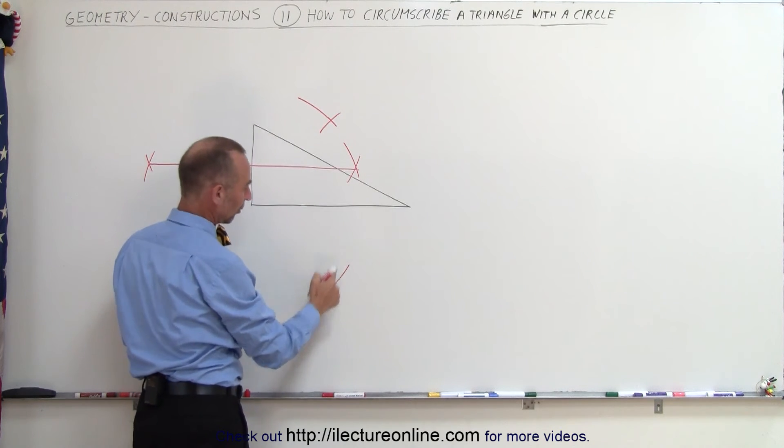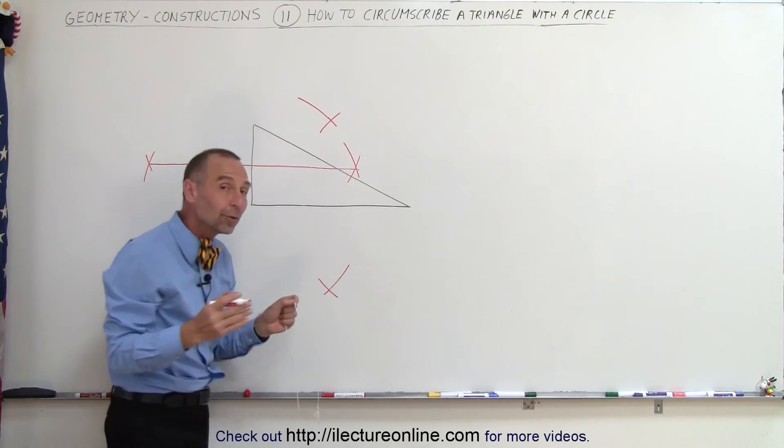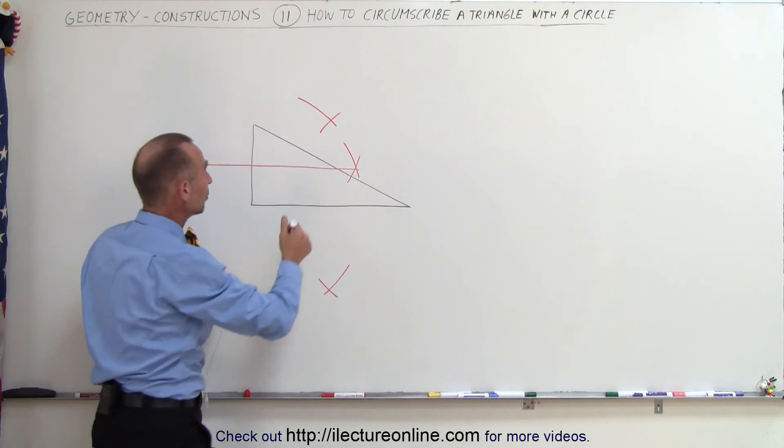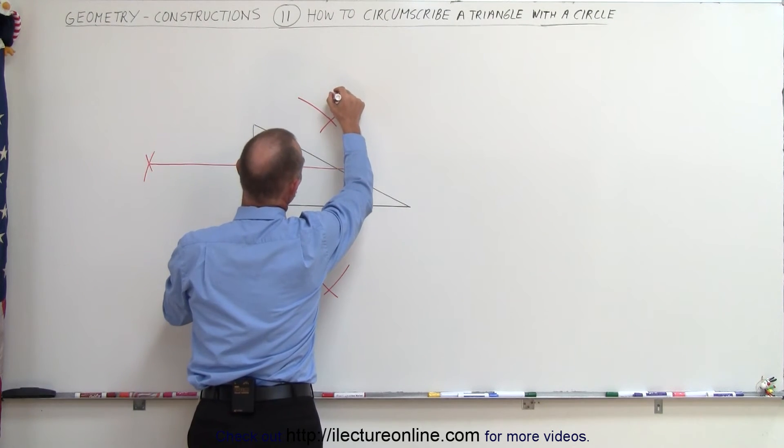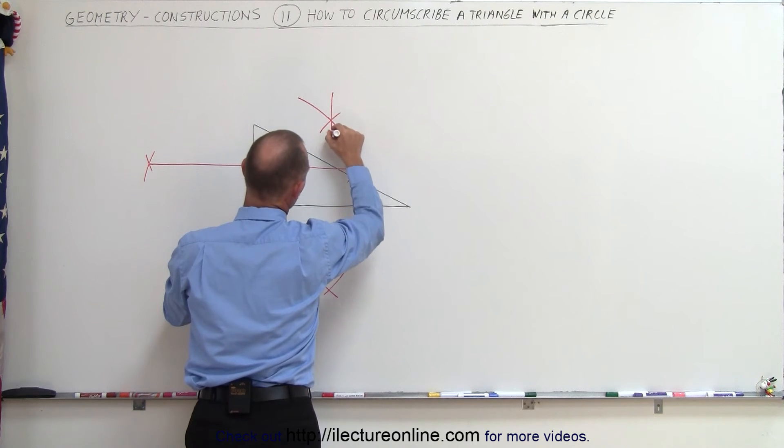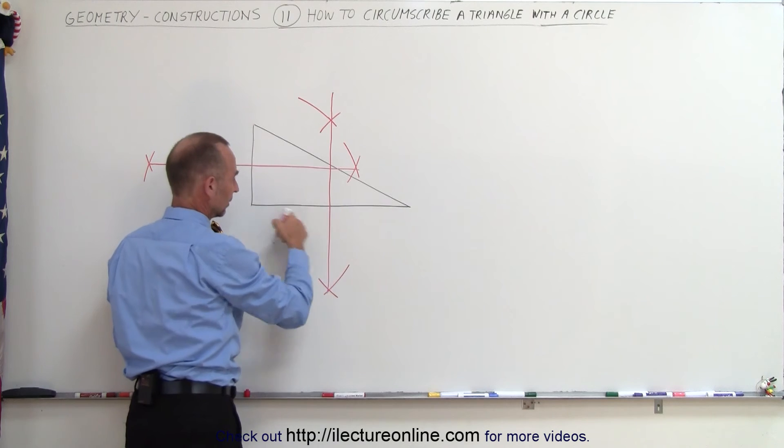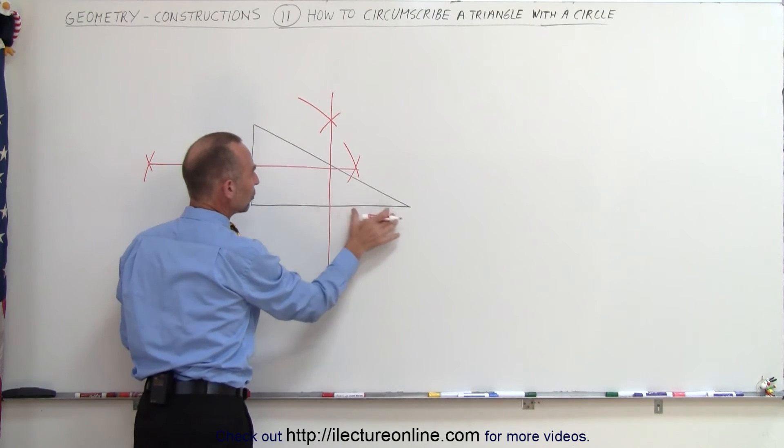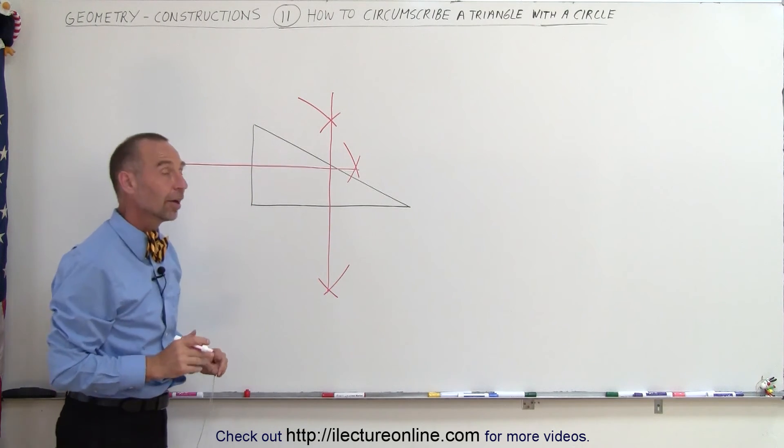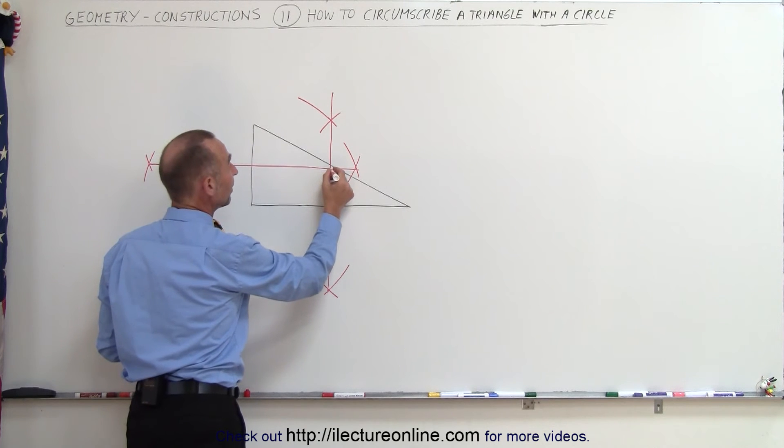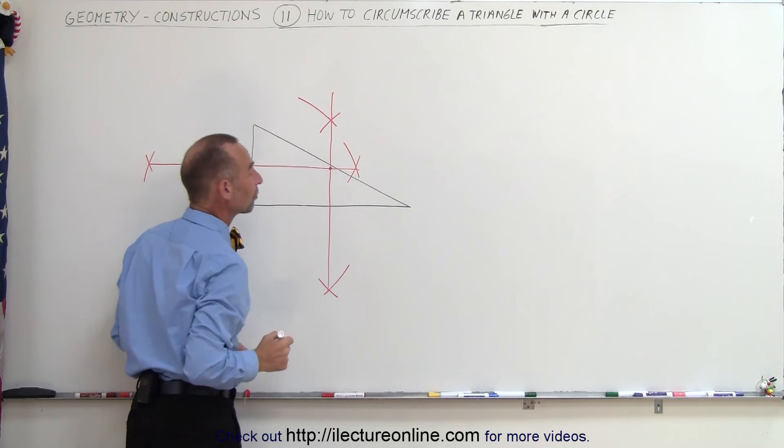You see where these two cross over here, where those two cross over there. We draw a line directly through that. As we do that, we again divide this side of the triangle into exactly two equal halves. Now you see where those two meet. This becomes the center of the triangle.